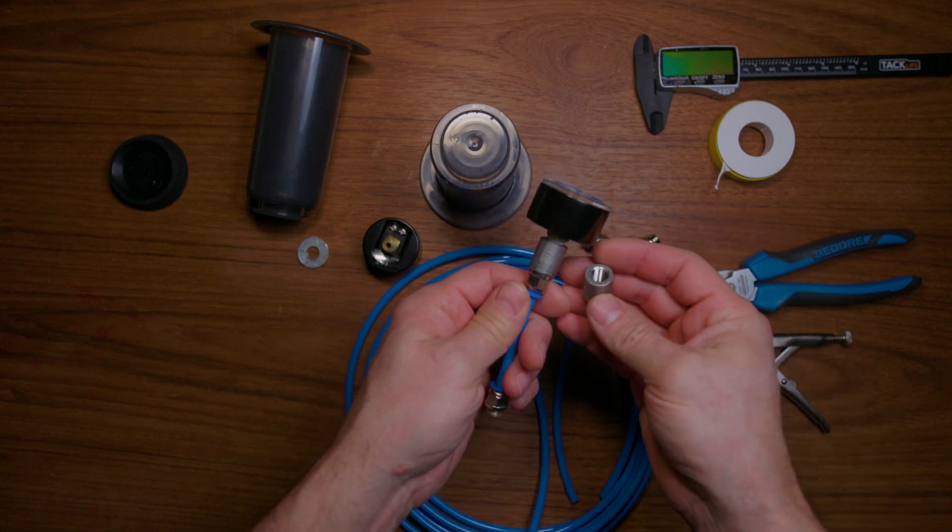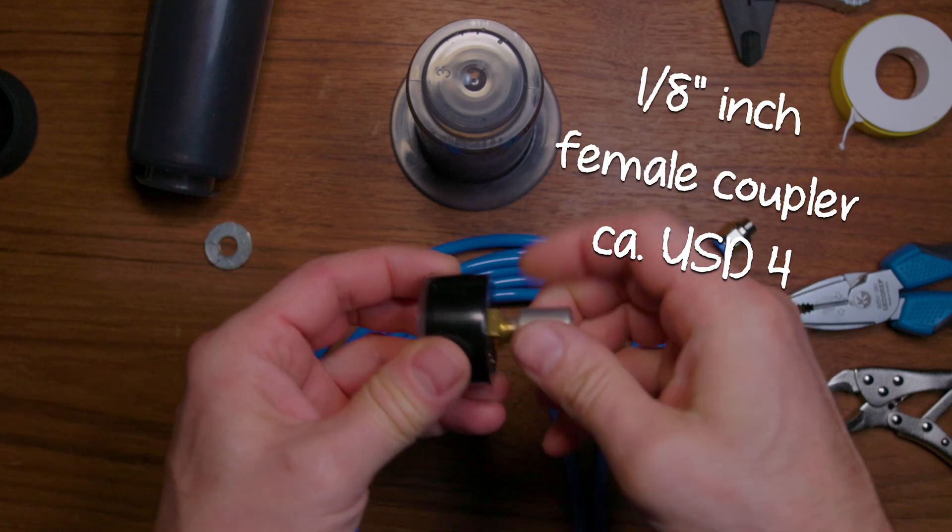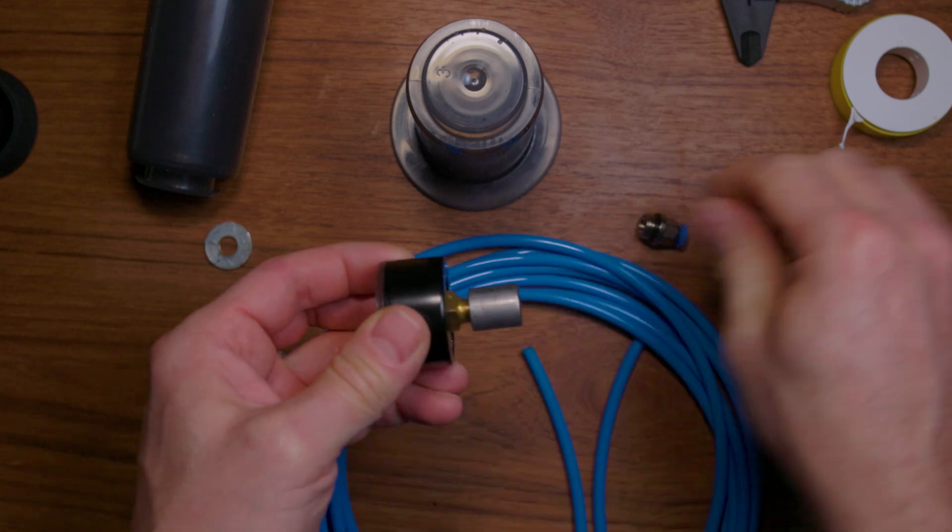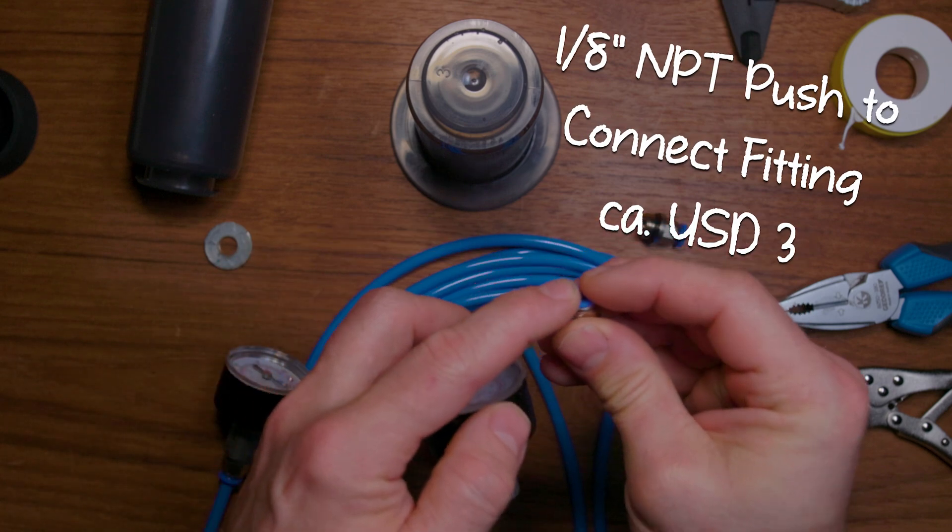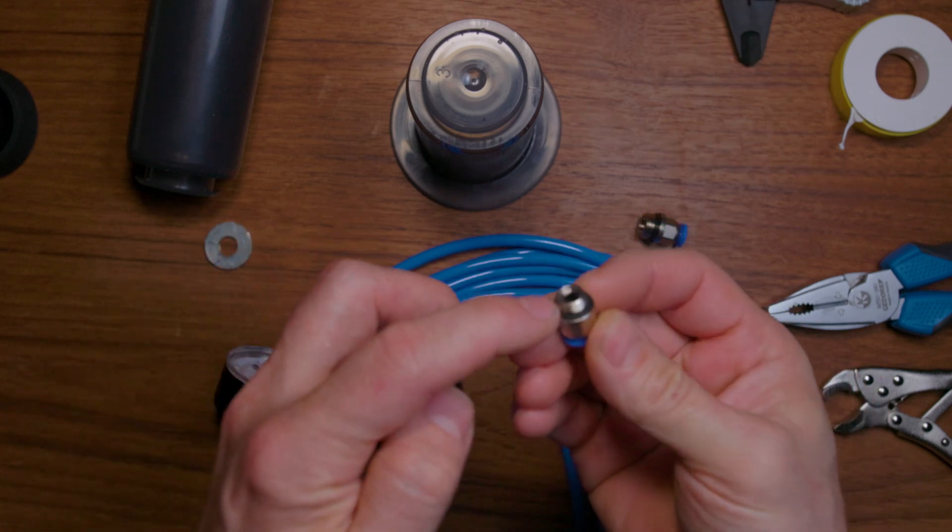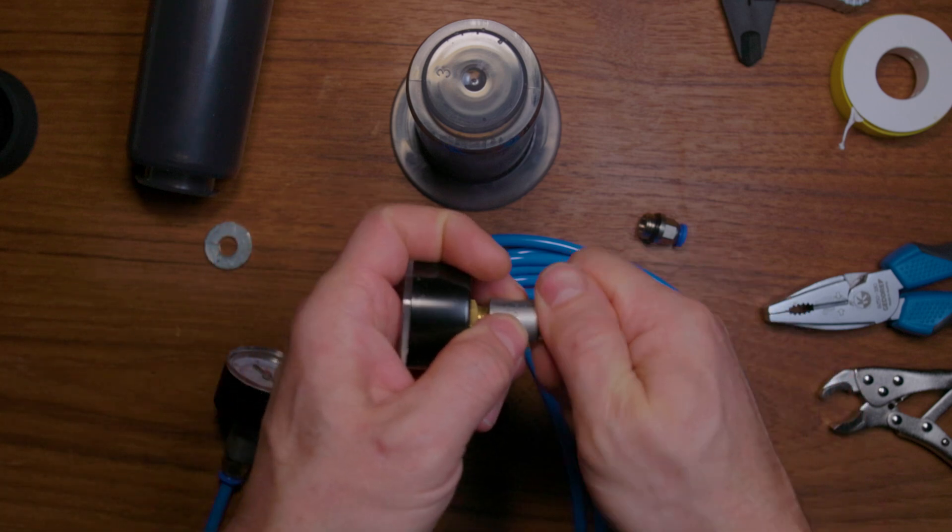So I used one-eighth of an inch. So I added the coupler on one side. On the other side this pneumatic fitting. It's a fast release system. It has a gasket here. So once you screw it in, it's actually tight.